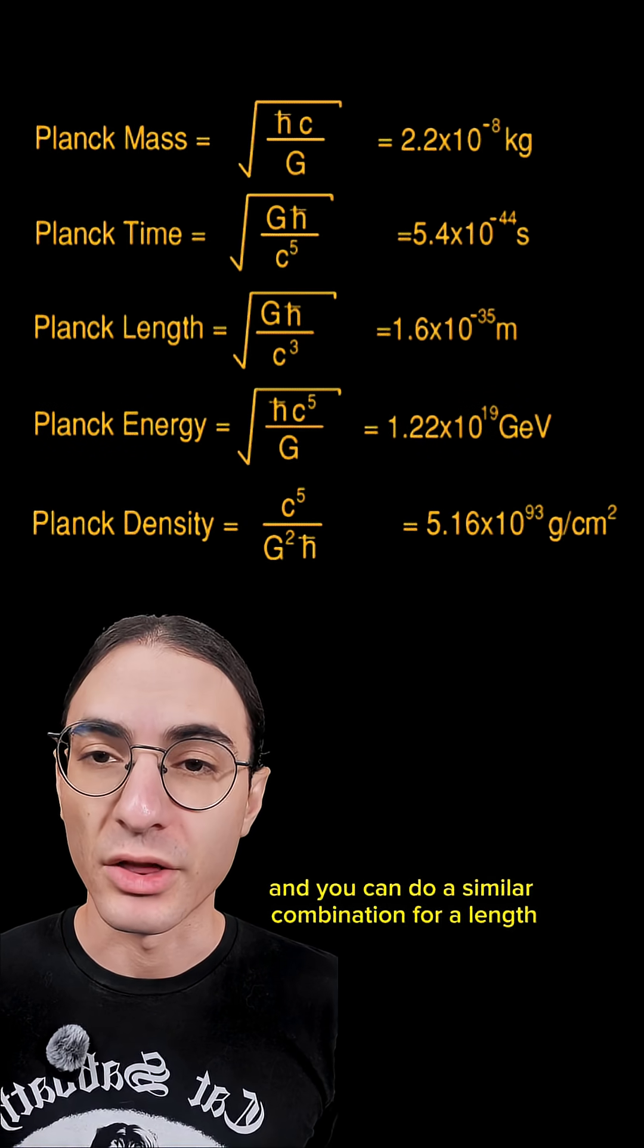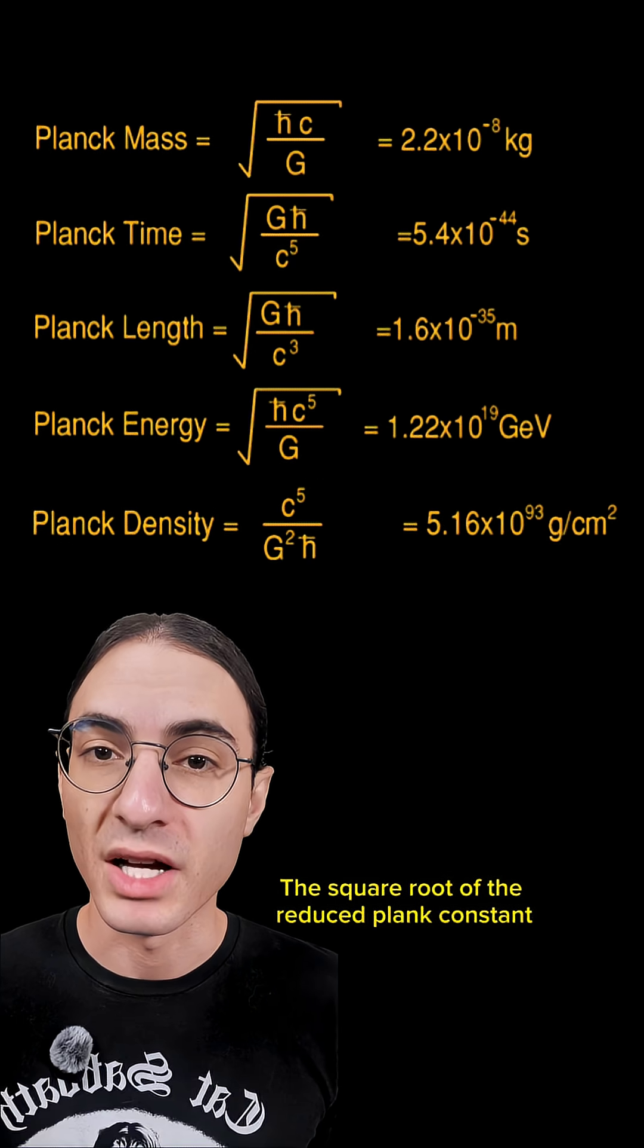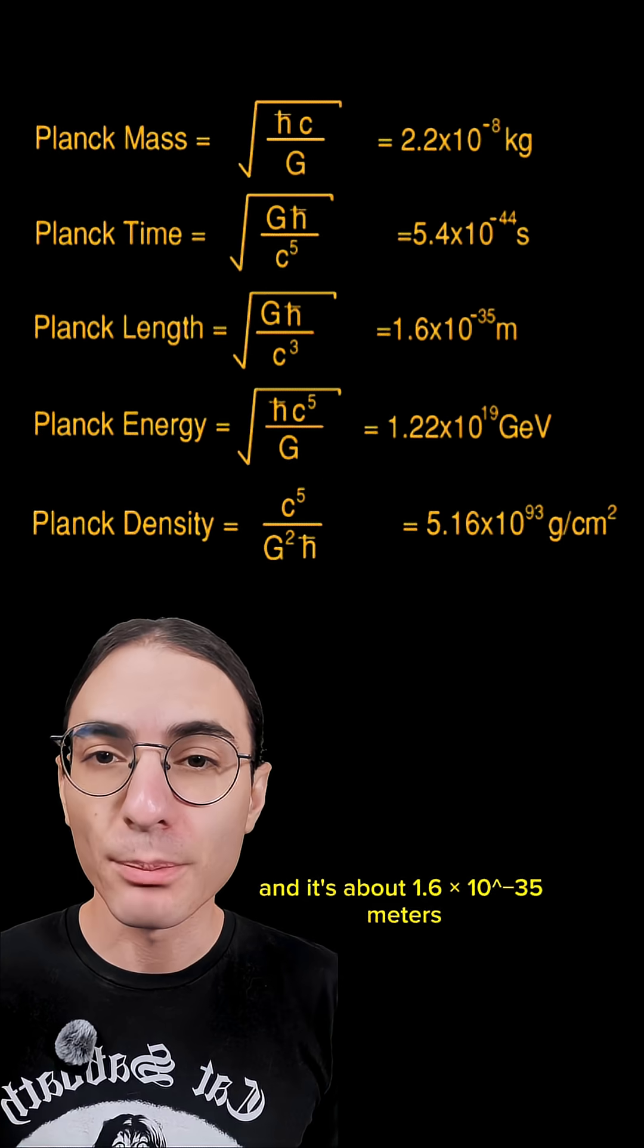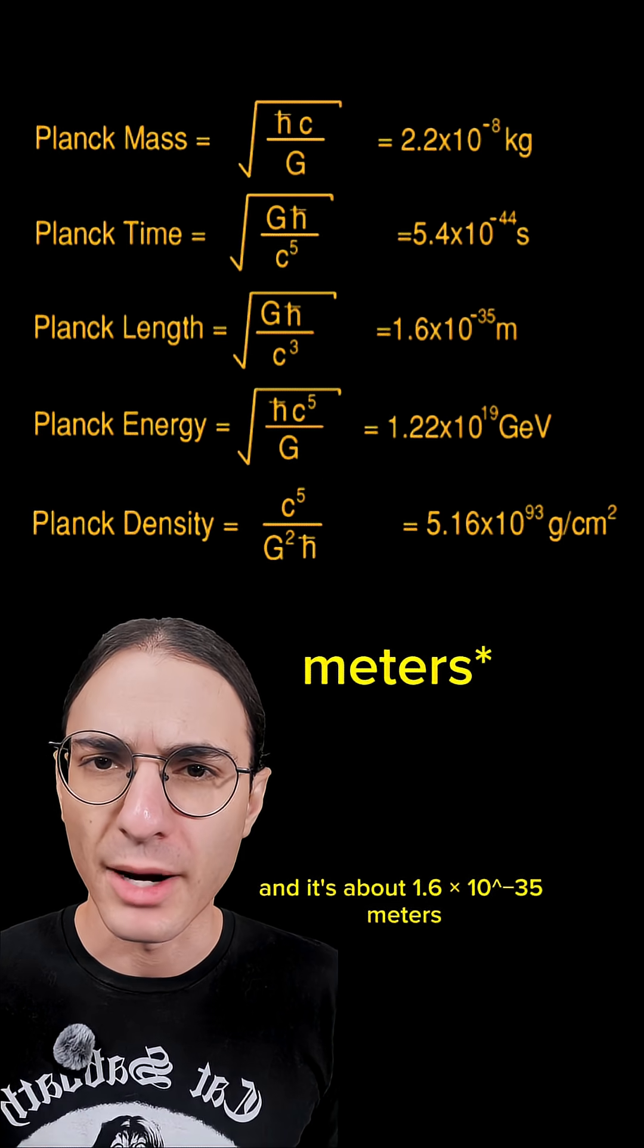And you can do a similar combination for a length. The square root of the reduced Planck constant times Newton's constant divided by the speed of light cubed gives a distance, and it's about 1.6 times 10 to the negative 35th power.